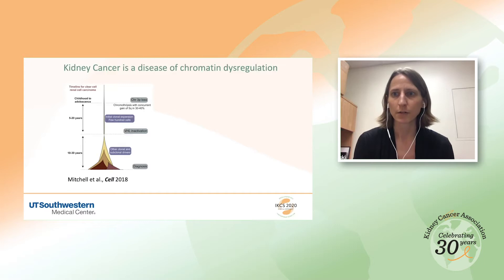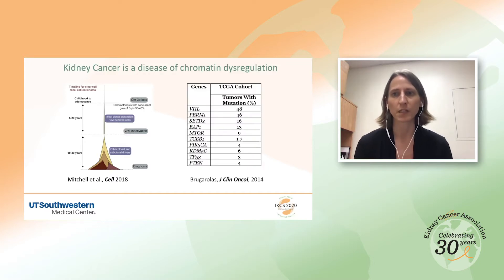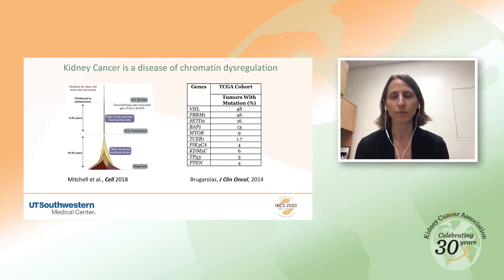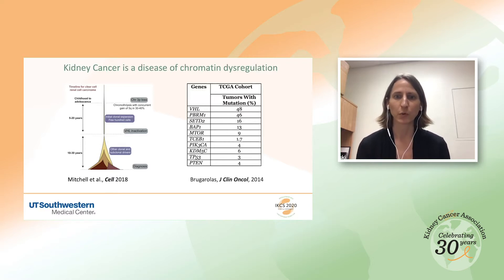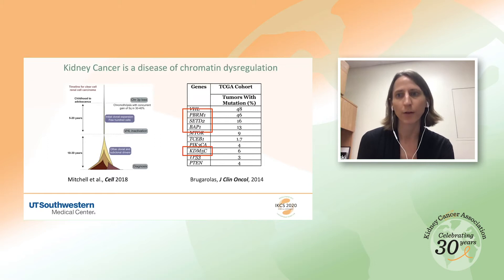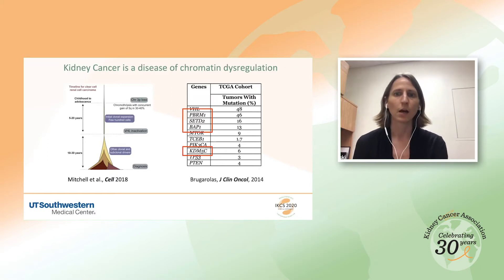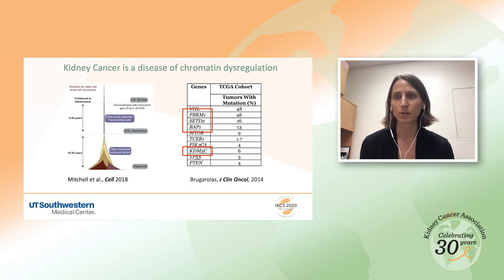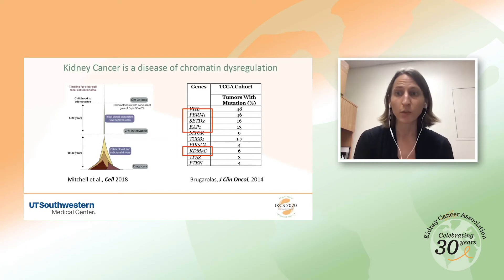Over the last 10 to 15 years, through exome sequencing, we now have exquisite views of the kinds of mutations that drive particular kinds of cancers. Here I'm showing you a list of genes compiled by Jim Brugorolis, looking at the top 10 most frequently mutated genes in kidney cancer. What immediately struck me is that 5 out of 10 of these genes — half — are chromatin-associated proteins. So kidney cancer is a disease of metabolism, but I would argue it is also a disease of chromatin dysregulation.